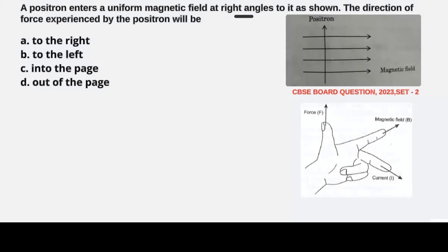You have to represent the magnetic field with your forefinger. The middle finger represents the current, then the thumb will represent the direction in which the force is acting on the charged particle.